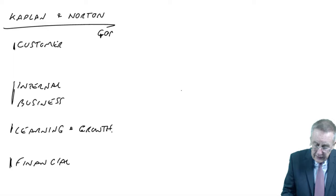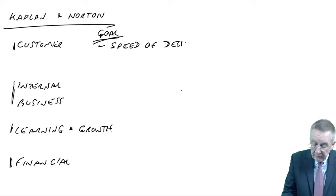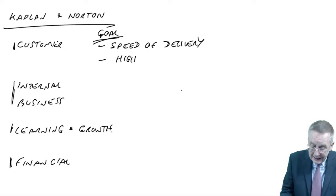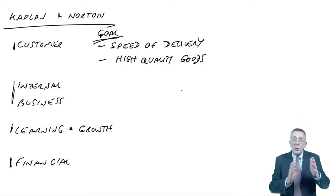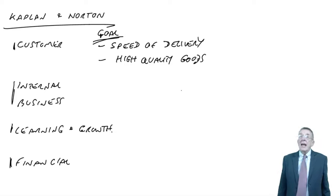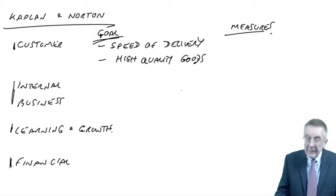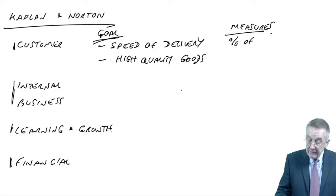There's no rule. We need to decide what are the most important things that matter to our customers — what's our goal. One goal could be speed of delivery; another goal could be high quality goods. There's no standard — it depends on the type of business. Once we've decided what's important, we don't just list 20 different things; we focus on the most important ones.